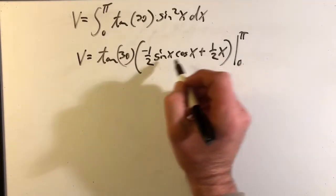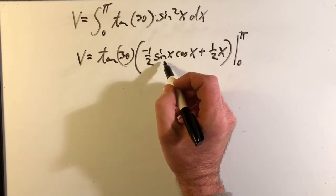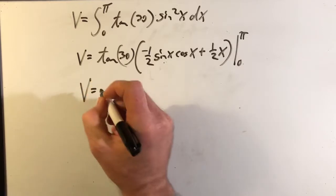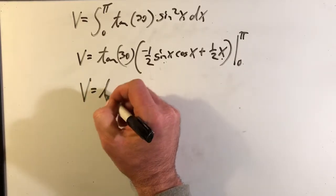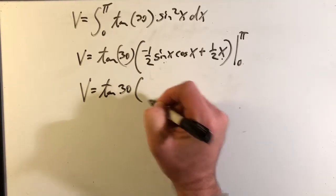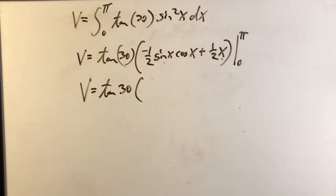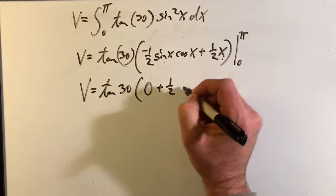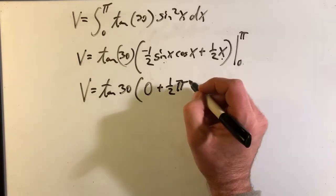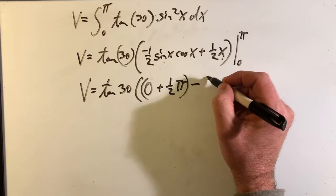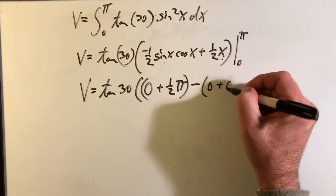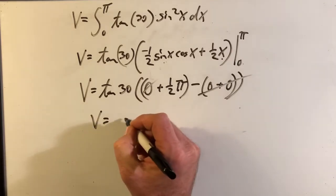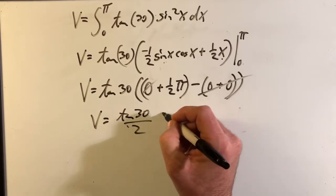So you can see when we put in a zero, that's going to go to zero. When we put in a pi, that's going to go to zero. So this is going to be the main driver here. So it's going to be tangent 30, and then we're going to have that's going to go to zero plus one half of pi, and that's going to be minus zero plus zero. Goes away, goes away. So we're just left with volume equals tangent 30 divided by two times pi.